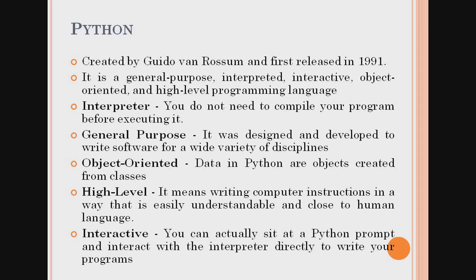Next is object-oriented programming language. Python is an object-oriented programming language — it is based on objects, and in these objects, data and methods are contained. Next is high-level language. A high-level language is easy to understand and very close to human language; the instructions and syntax are easy to understand.